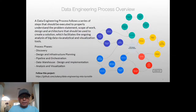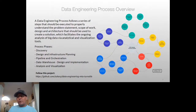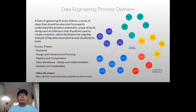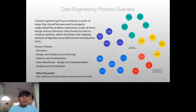To get started, let's understand a little bit more about what a data engineering process is. The diagram you see is a brainstorm visualization that shows what the process may look like. A data engineering process is really a series of steps that, if executed properly, enables us to understand the problem statement, define the scope of work, and design the architecture to support big data use cases for analytical and visualization purposes.